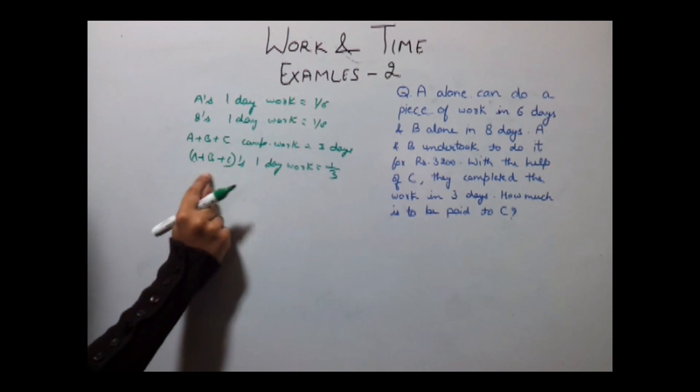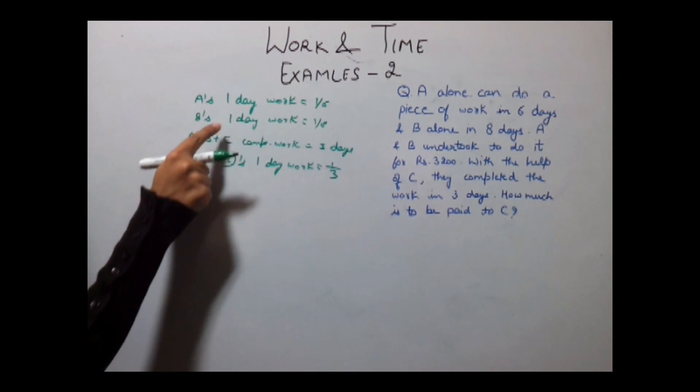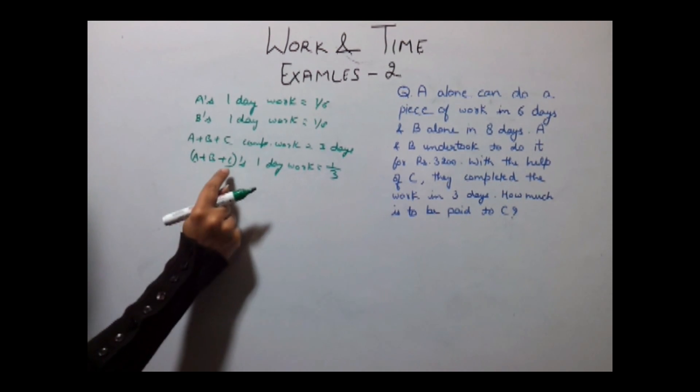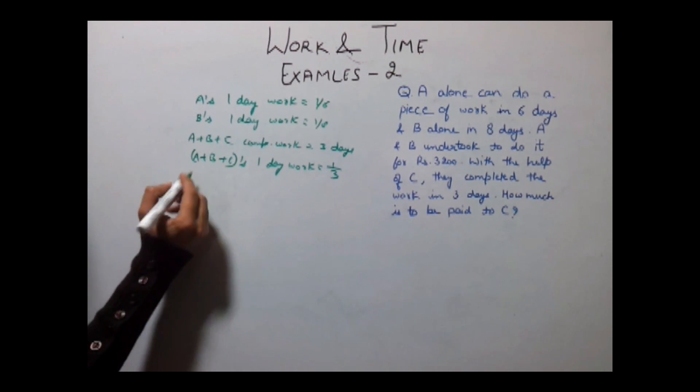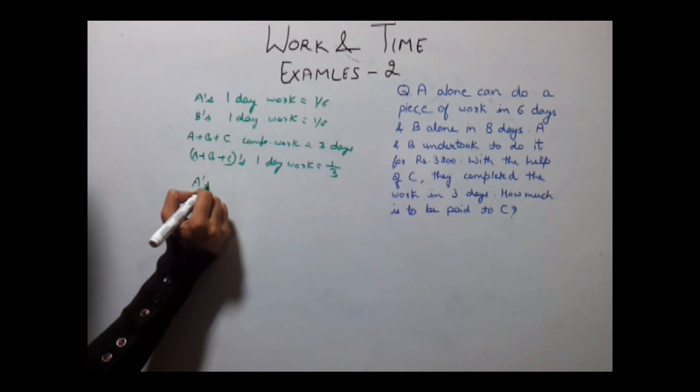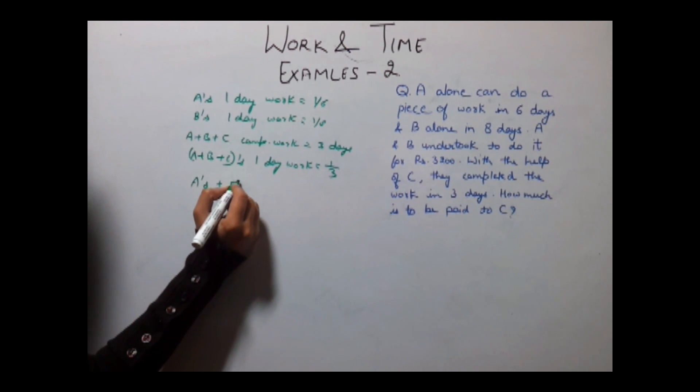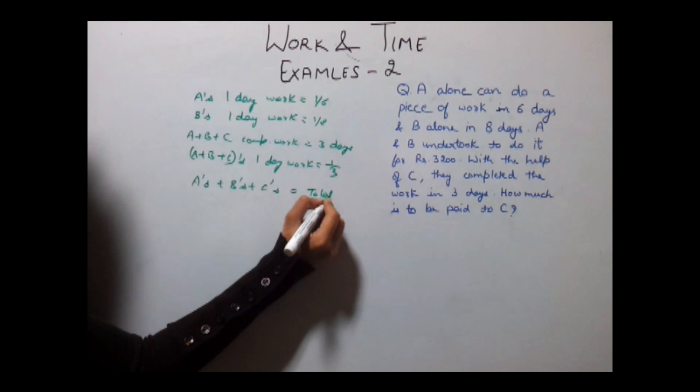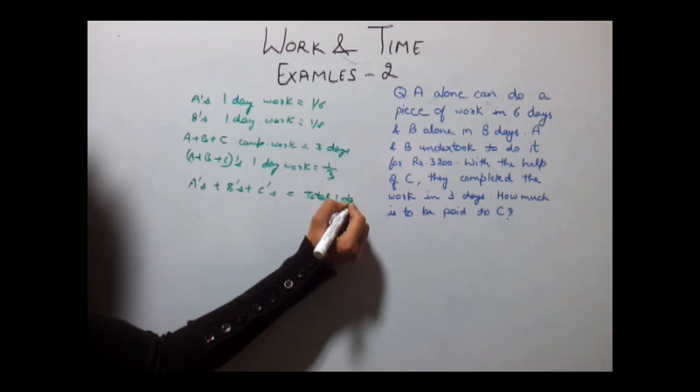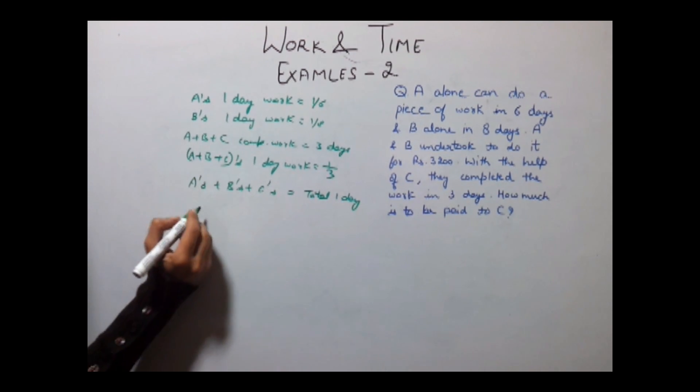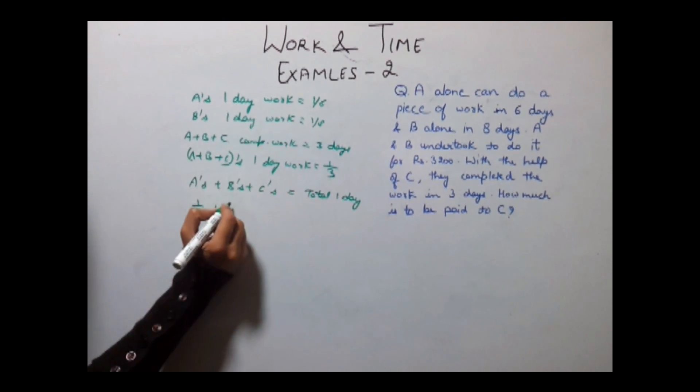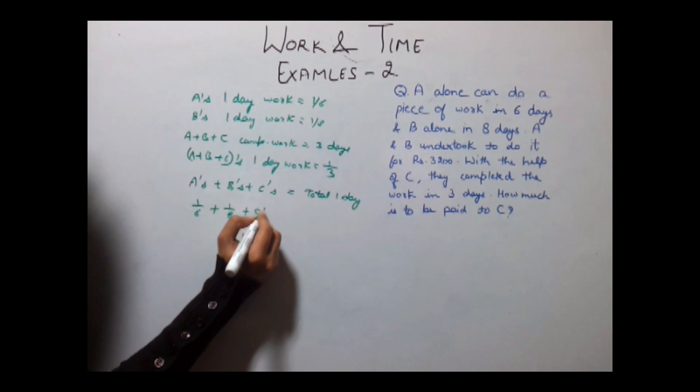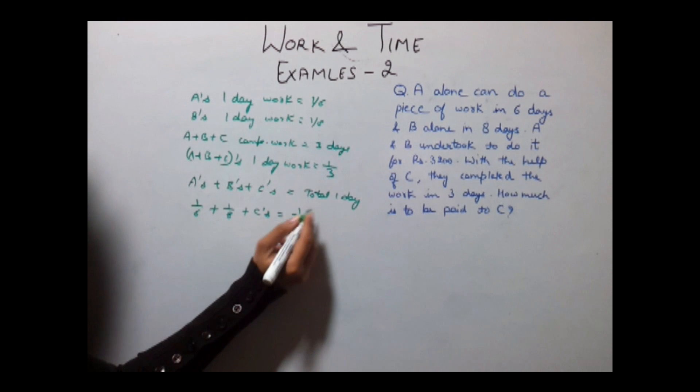Now with the help of this equation we can calculate C's one day work. A's plus B's plus C's one day work is equal to their total one day work. A's one day work is 1/6 plus B's one day work which is 1/8 and C's one day work is equal to 1/3.